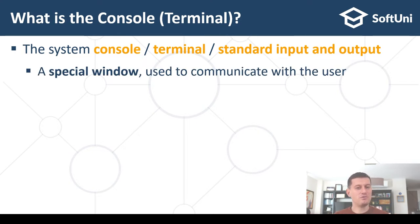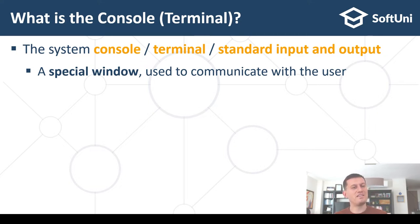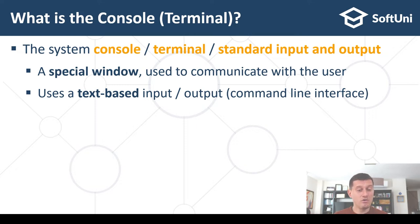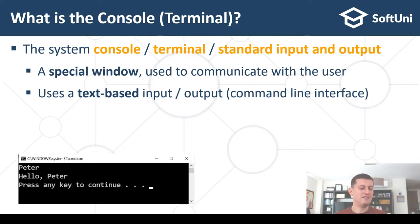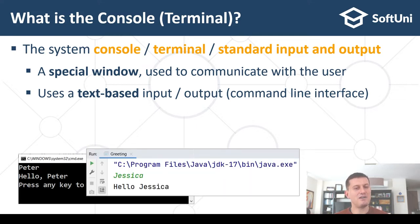The console is a special window used to communicate with the user. We can consider it a place where the user can write something and send that data to the program. The program processes this data and prints some output, which is also text-based information. So the console uses text-based input and output. It's a text-based interface, also called a command-line interface, because we can send commands through this input and output text data.